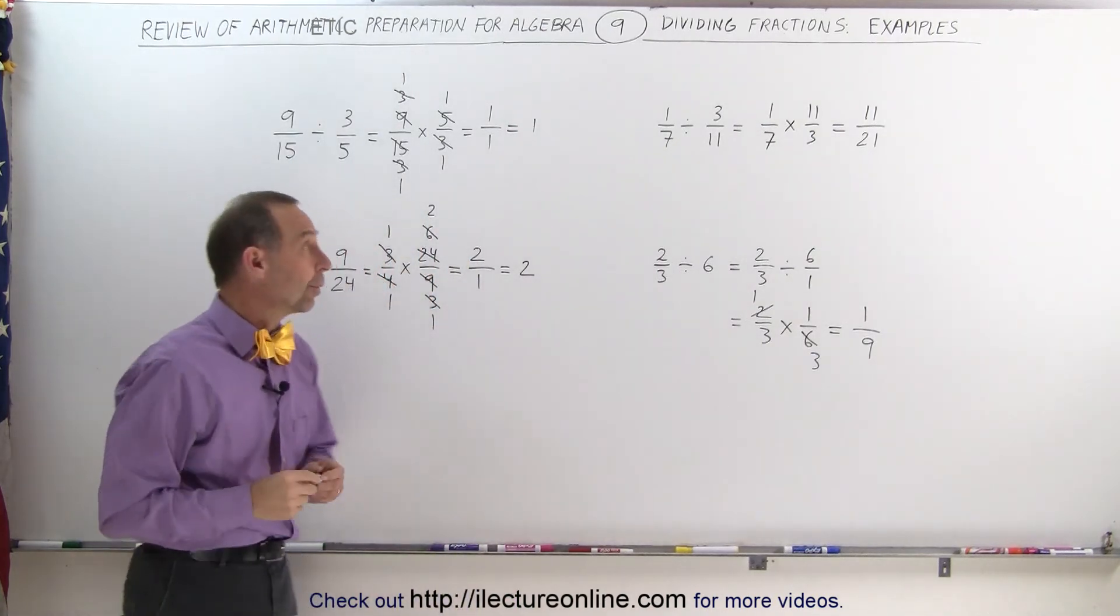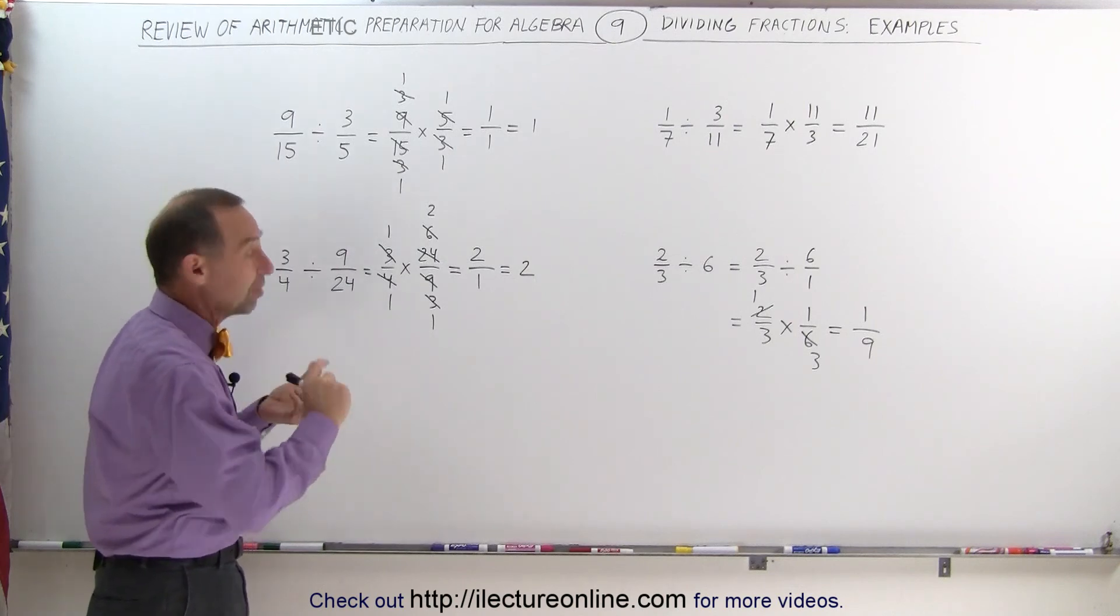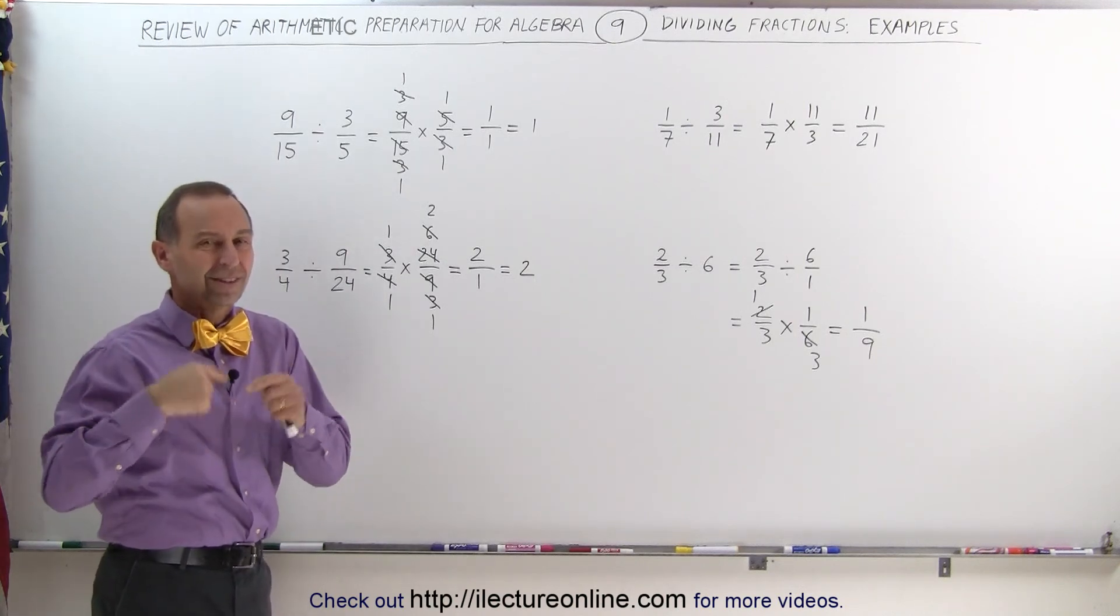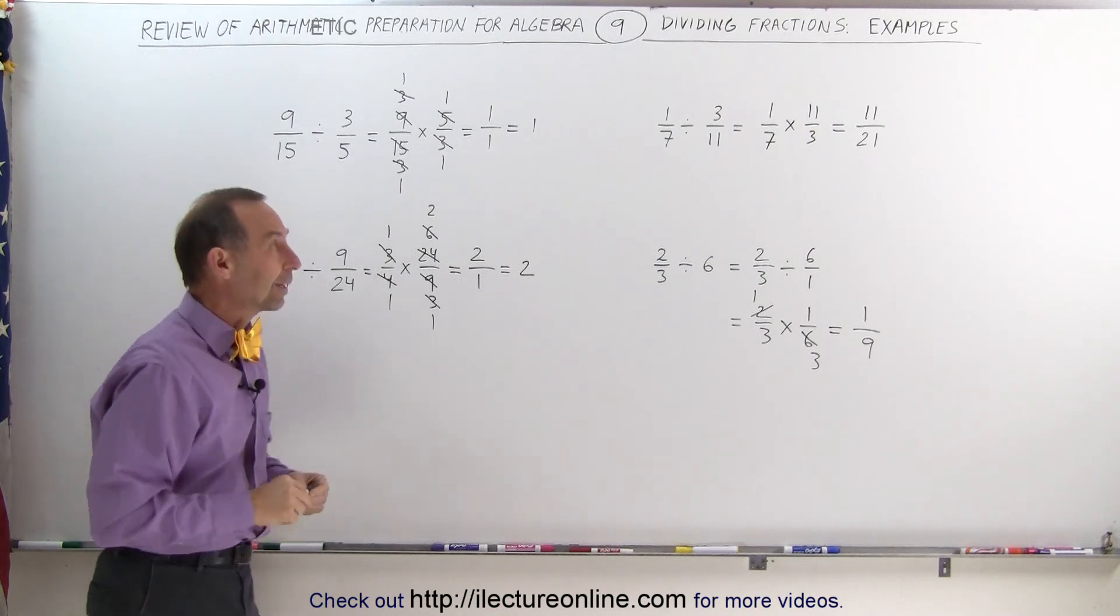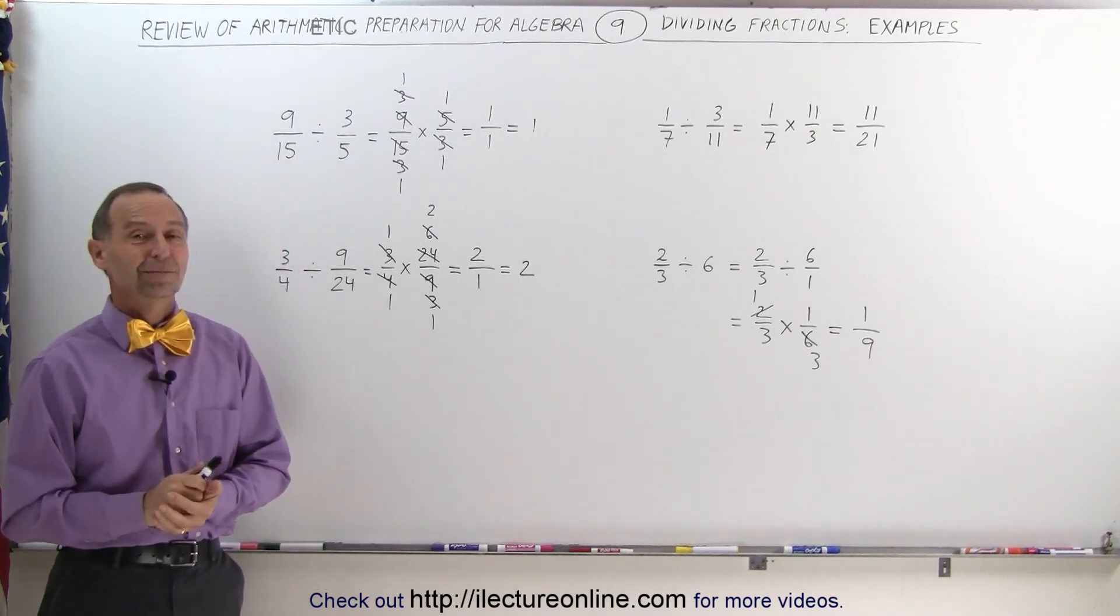So it's pretty simple, whenever you have to divide by a fraction, you simply flip the fraction over, taking its inverse, and you multiply instead of divide, and you get the correct answer, and that's how it's done.